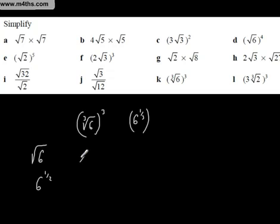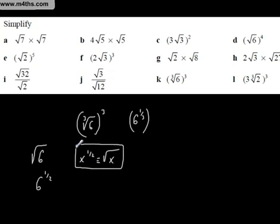x to the half is identical to root x. So if we've got the nth root, essentially this n will be the denominator of the fractional exponent. Now we're going to cube that — our basic rules of indices say 3 times 1/3 is 1, so this is going to be 6.